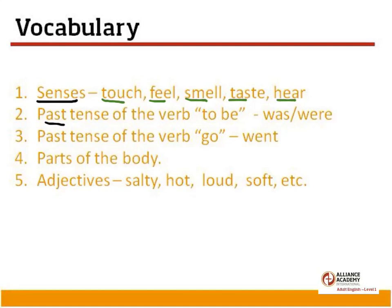We also need to know the past tense of the verb 'to be': was or were. And the past tense of the verb 'go,' which is 'went.' A huge part of Module 7 is learning the parts of the body — fingers, hands, toes.